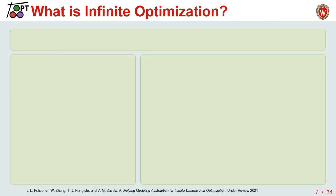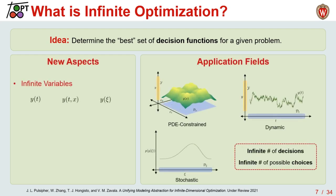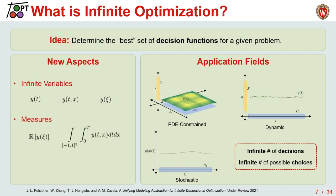What is infinite optimization? The difference here is that instead of scalar decisions, we're choosing decision functions. The new aspects that come into play are what we call infinite variables, or decision functions, which you can think of as manifolds we're trying to shape as best dictated for a particular problem. Because we usually have a continuum, there are infinitely many decisions over the space of that function. This complexity is compounded by the addition of measures, such as integrals or risk measures, and derivative objects that often come up in these types of models.